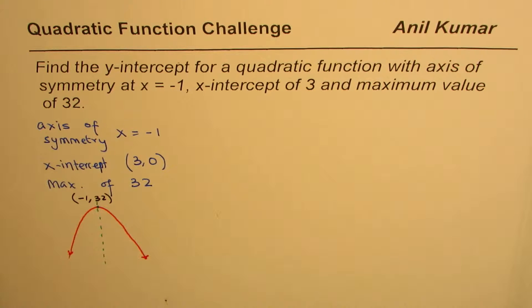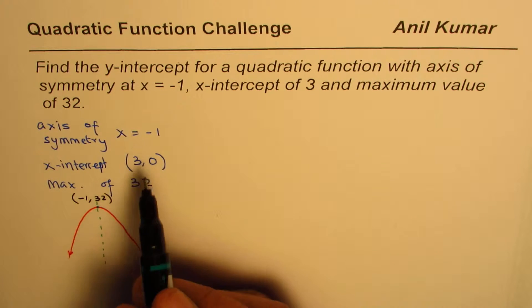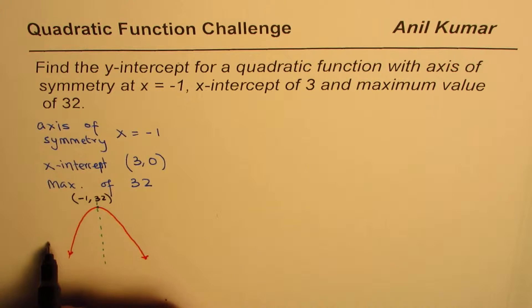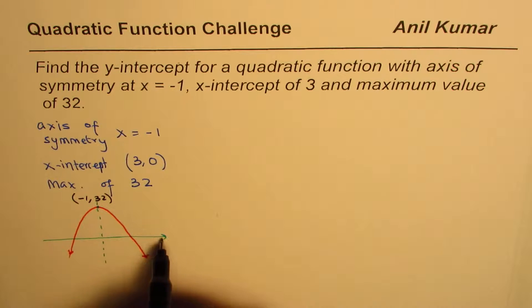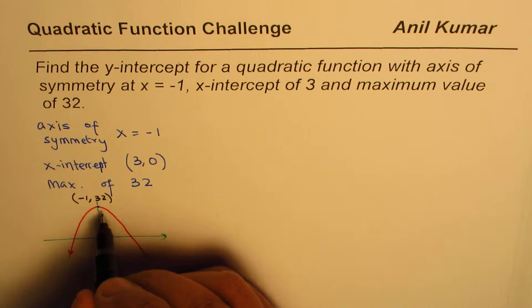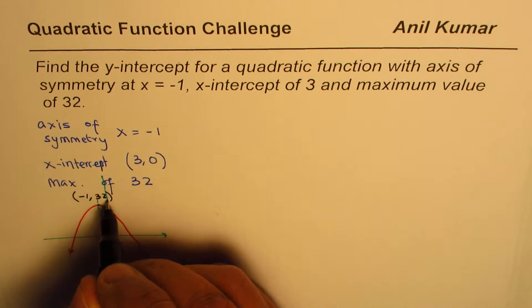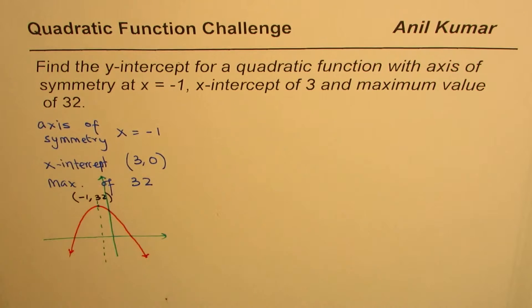Now we are given axis of symmetry, x-intercept of 3 and maximum. So that is kind of the parabola, and we also know that the x-intercept is—let me just sketch this line here. So this is minus 1, and the y-axis will be somewhere here, okay, that's the y-axis.